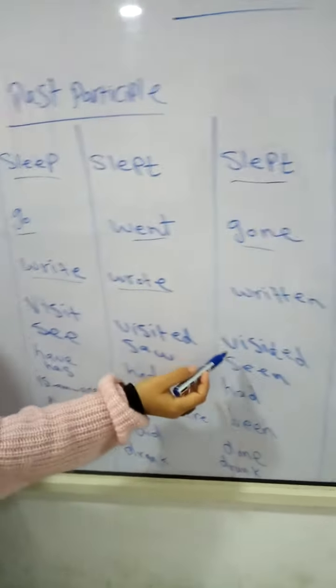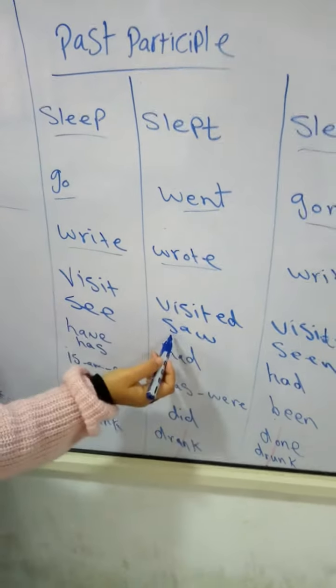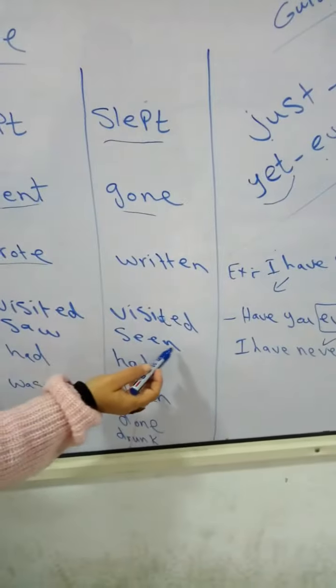Visit, visited, visited. It's a regular verb. I will write 'a' or 'ed'. See, the verb is see. Past participle? Yes. Seen, okay.